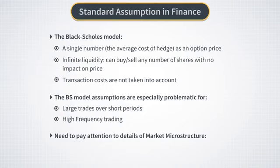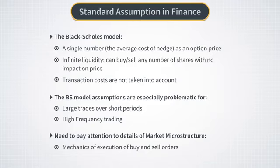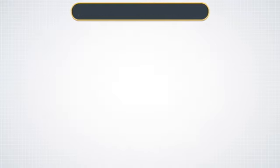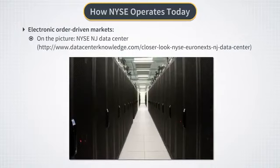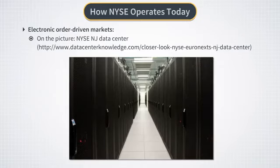In both cases it turns out that the mechanics of execution of buy and sell orders is important to understand these aspects of market behavior, and this is usually referred to as market microstructure — which is what we are going to talk about in this lecture. Here is a photograph of a data center of New York Stock Exchange taken today rather than a hundred years ago. There are no more people shouting on the floor; trading is now done electronically, and all market orders are registered and stored as historical data sampled at very high resolution.